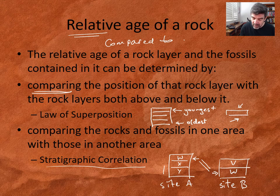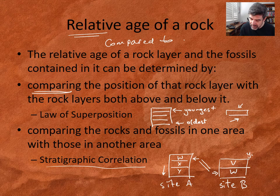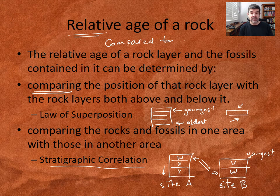X and Y being below them in the column would be older, and V would be younger. We can also use this to put a different sequence of rock layers into an order in terms of their age, and this is one of the activities that you've already done in this topic.